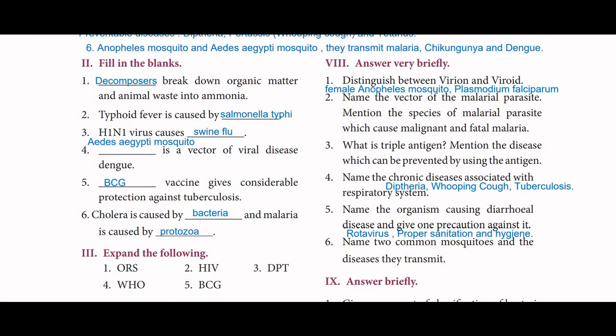Next, fill in the blanks. Decomposers break down organic matter and animal waste into ammonia. Typhoid fever is caused by Salmonella typhi. H1N1 virus causes swine flu. Aedes aegypti mosquito is a vector of the viral disease dengue. BCG vaccine gives considerable protection against tuberculosis. Cholera is caused by bacteria and malaria is caused by protozoa.